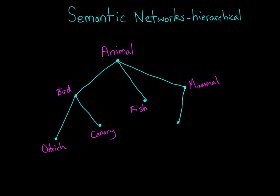But simple labels aren't the only type of knowledge that we store. We can store characteristics and properties of concepts at each node. According to the principle of cognitive economy, which just means that our brain is efficient, we store these properties at the highest possible node. So instead of storing 'can breathe' at each animal's node, we store that property just at the animal node. More specific characteristics, such as 'sings' or 'long legs,' would be stored at lower level nodes.